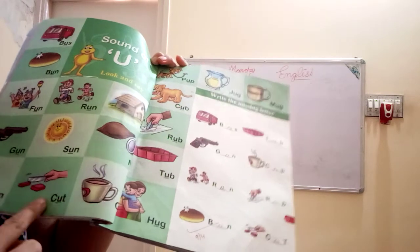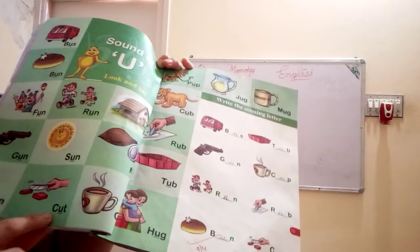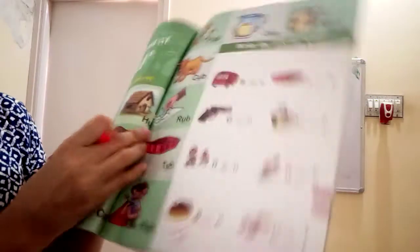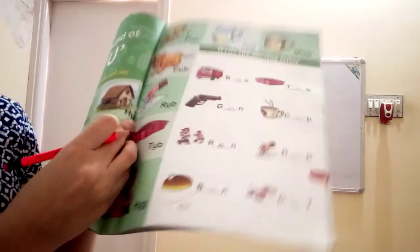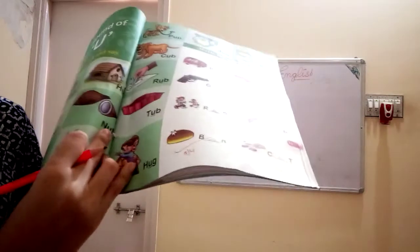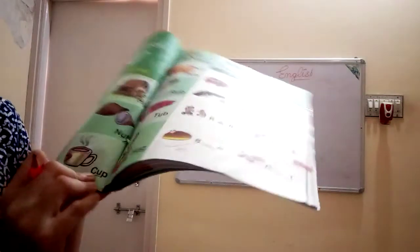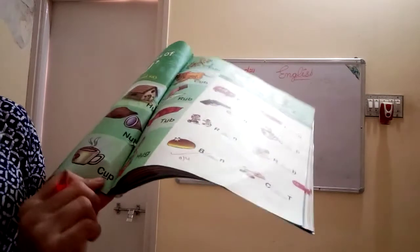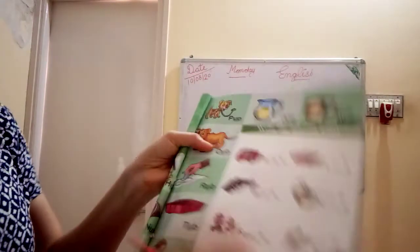Next. C.U.T. Cut. Cut ki spelling kya hogi? C.U.T. Cut. Next. Hut. H.U.T. Hut. Next. Nut. N.U.T. Nut. C.U.P. Cup. Cup ki spelling kya hogi? C.U.P. Cup.